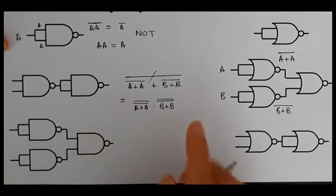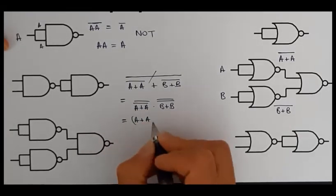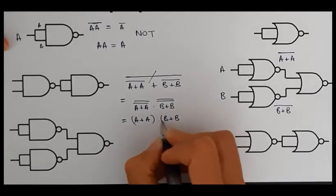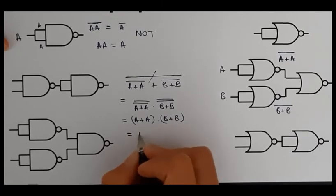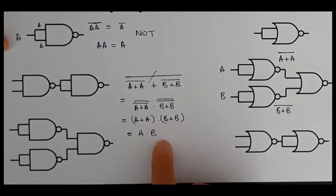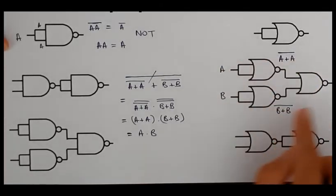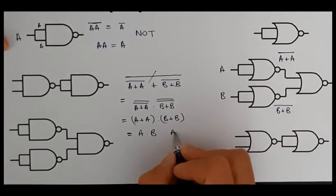You know that two NOTs cancel each other out. So I'm going to end up with (A + A)·(B + B). You know that A OR A is just going to be equal to A and the same applies to the B. So this is the same as A AND B. So this configuration made purely out of NOR gates is the equivalent of an AND gate.